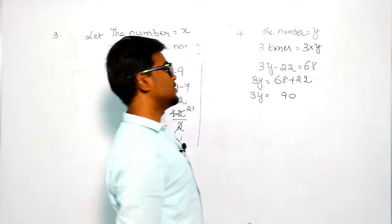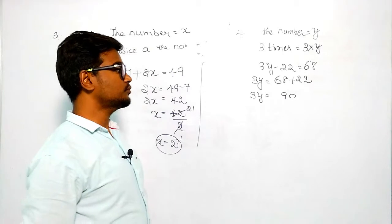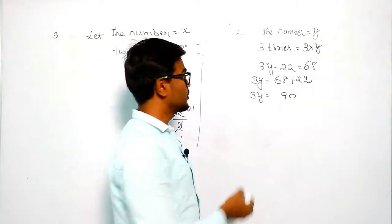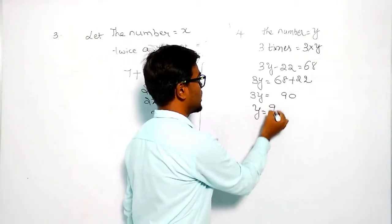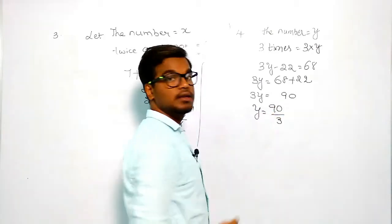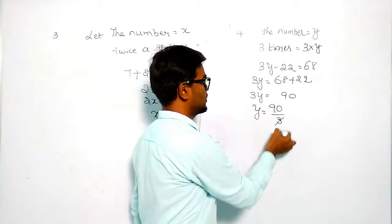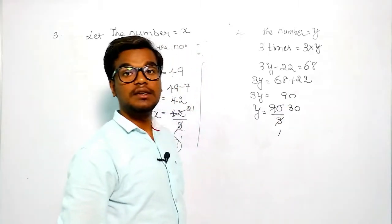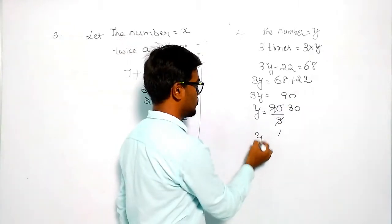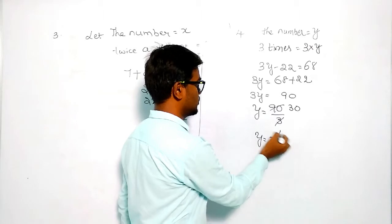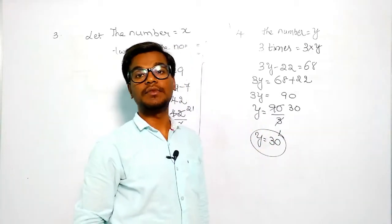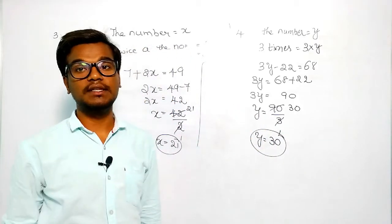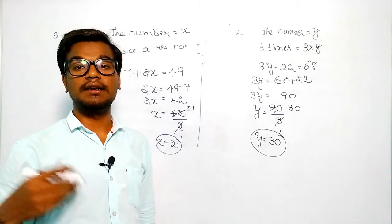So 3y equals 90, which means y equals 90 divided by 3, giving y equals 30. So this is our answer. If you have any doubts or questions, please comment below.